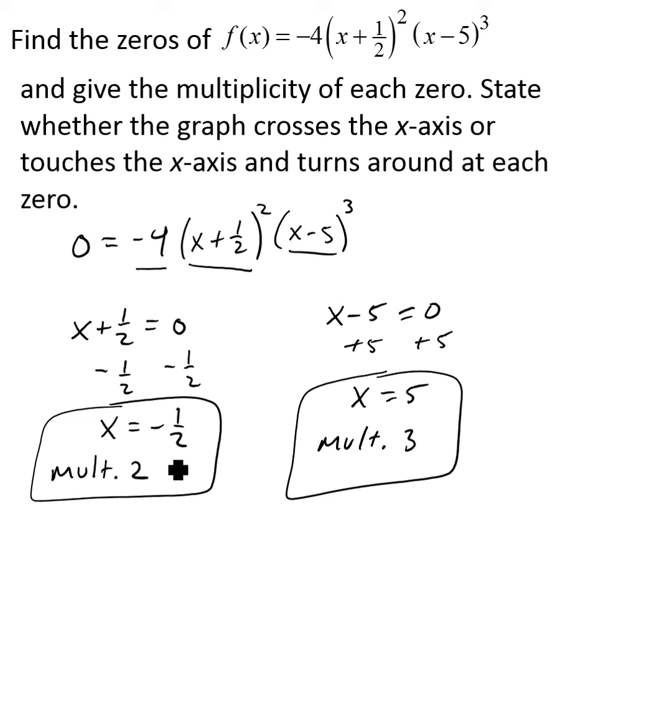So here, our first zero has a multiplicity of two. That's an even multiplicity, and that indicates that the graph touches the x-axis and turns around at that zero. And so at this x equals negative one-half, this graph would touch the x-axis and turn around. And so that's true any time our multiplicity is even.